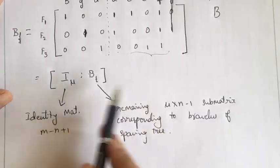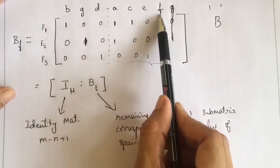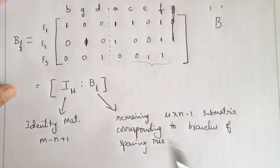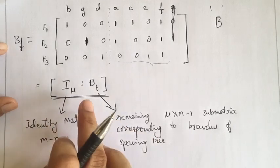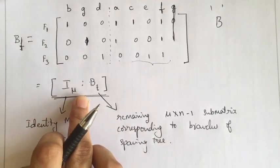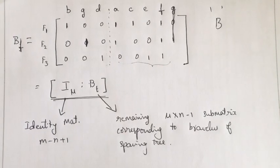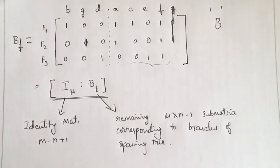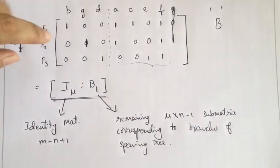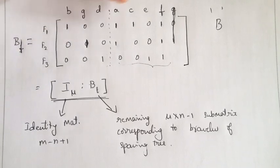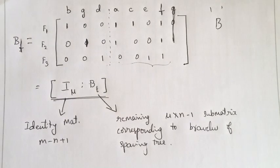To write it in this form, chords are listed first and then the branches of the spanning tree. This is why the fundamental circuit matrix can be expressed in that manner. This structure is helpful when finding the rank of the fundamental circuit matrix or the rank of the circuit matrix.